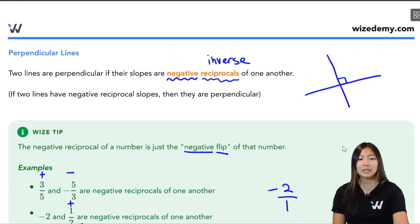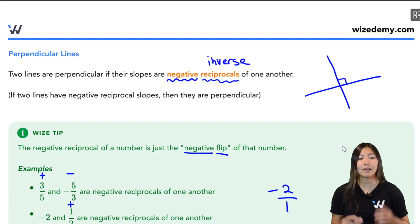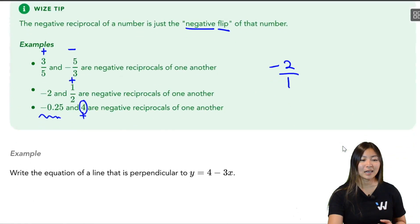All right. So perpendicular lines have this cool property that if they're perpendicular, their slopes are negative reciprocals of one another. And if I told you that two lines have negative reciprocal slopes, I don't even need to see these lines - I know they're automatically perpendicular.